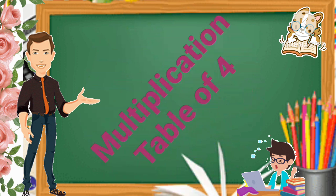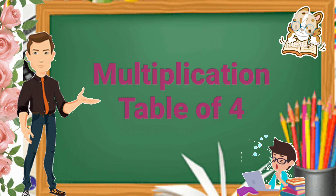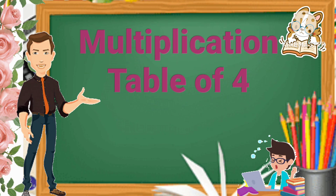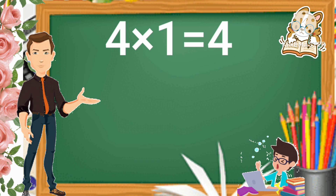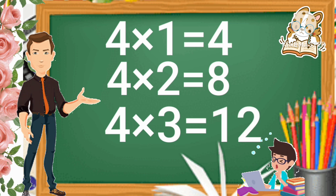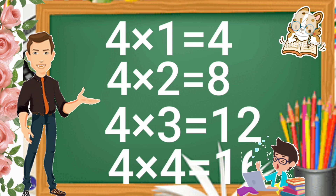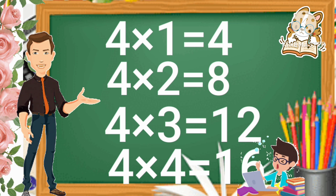Multiplication Table of 4. 4 times 1 is 4. 4 times 2 is 8. 4 times 3 is 12. 4 times 4 is 16.